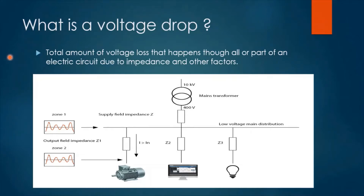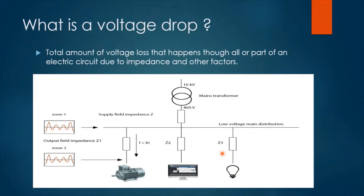Voltage drop is the total amount of voltage loss that happens through all or part of an electric circuit due to impedance and other related factors. Looking at this diagram, we can see a low voltage system single line diagram. The secondary side of this transformer gives us 400 volts, which is distributed throughout the entire system to reach different devices and equipment — including motors, computers, lights, and other appliances. However, the 400 volts will go through obstacles, or what we call impedance or resistance, that will cause a drop or loss in the voltage when it reaches its destination, or what we call the branch final circuit.